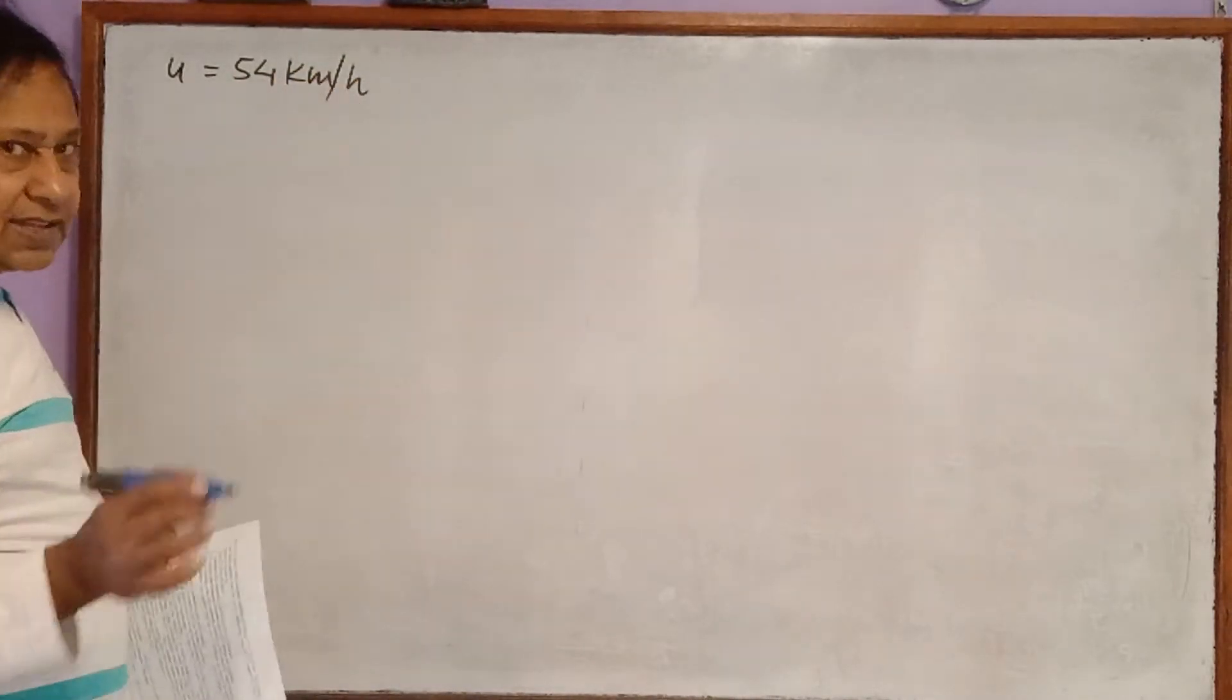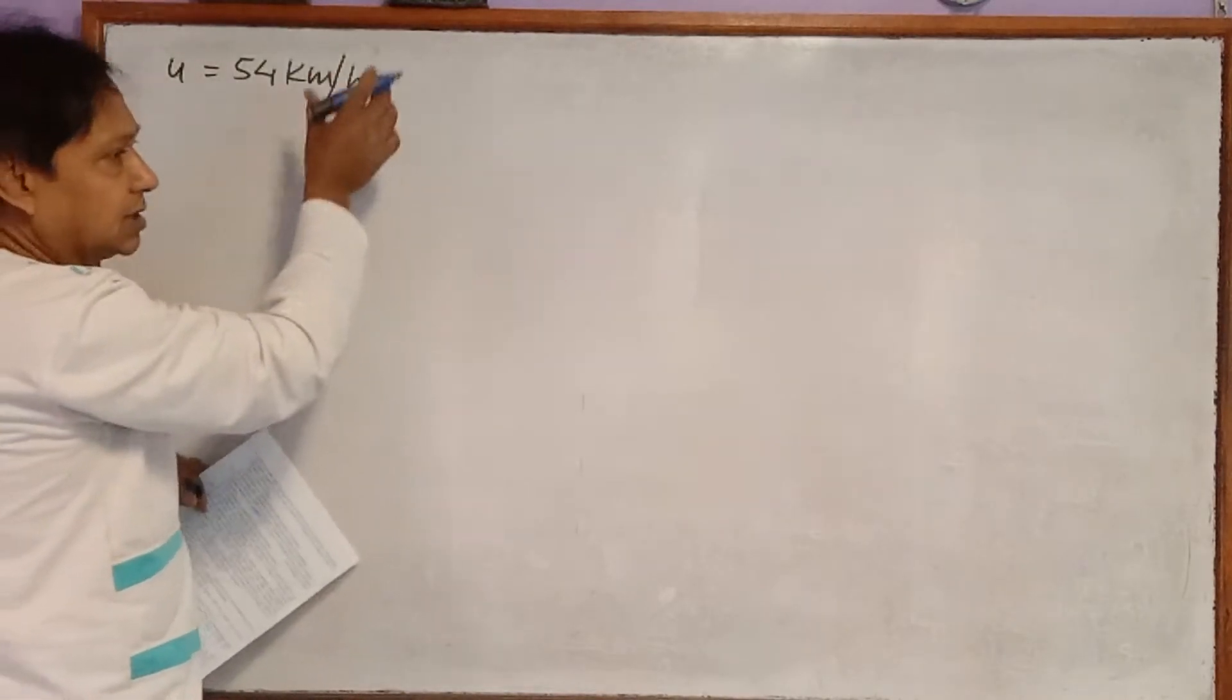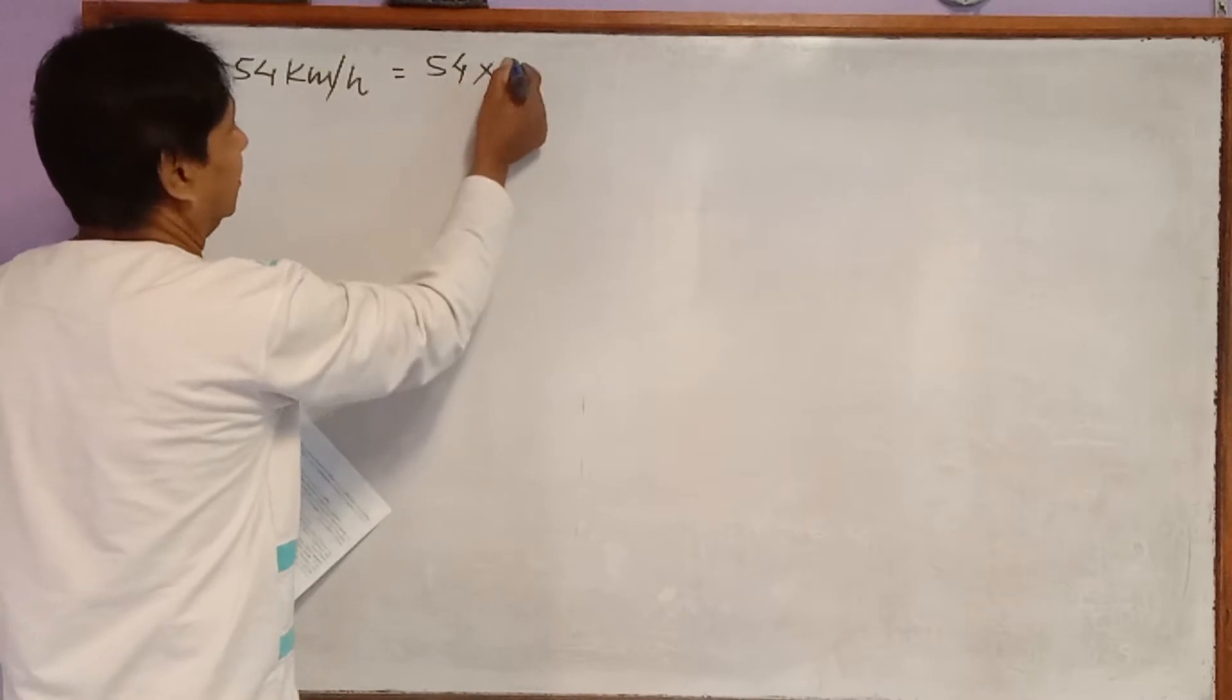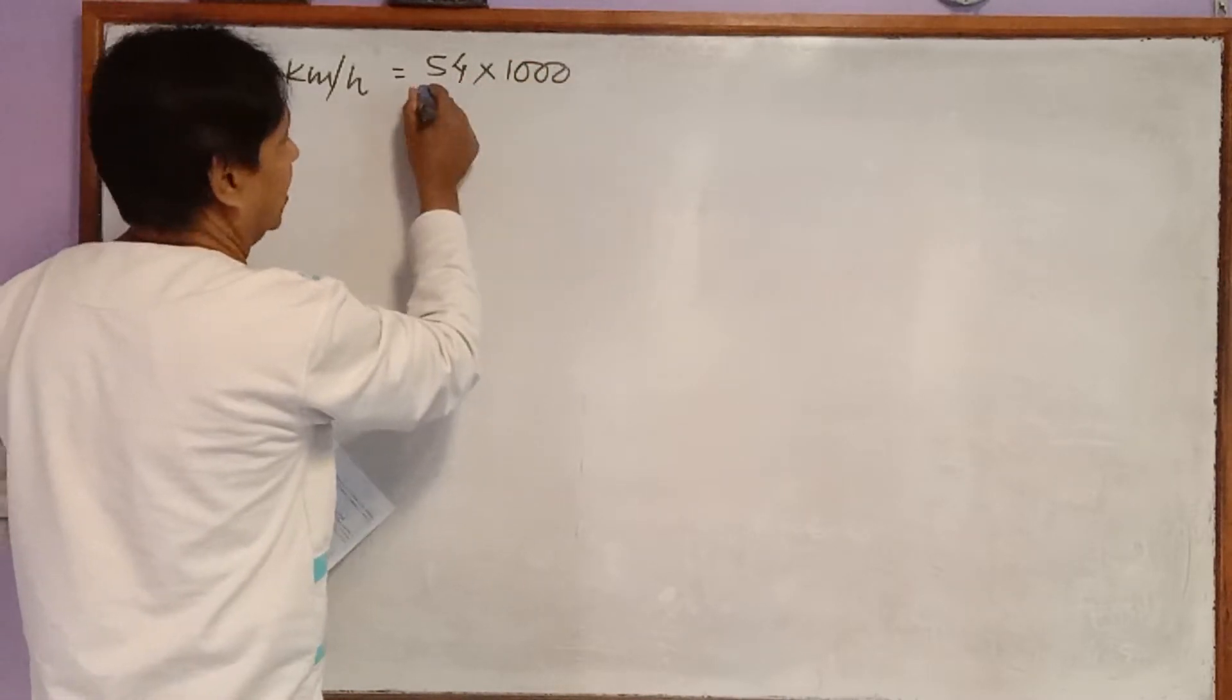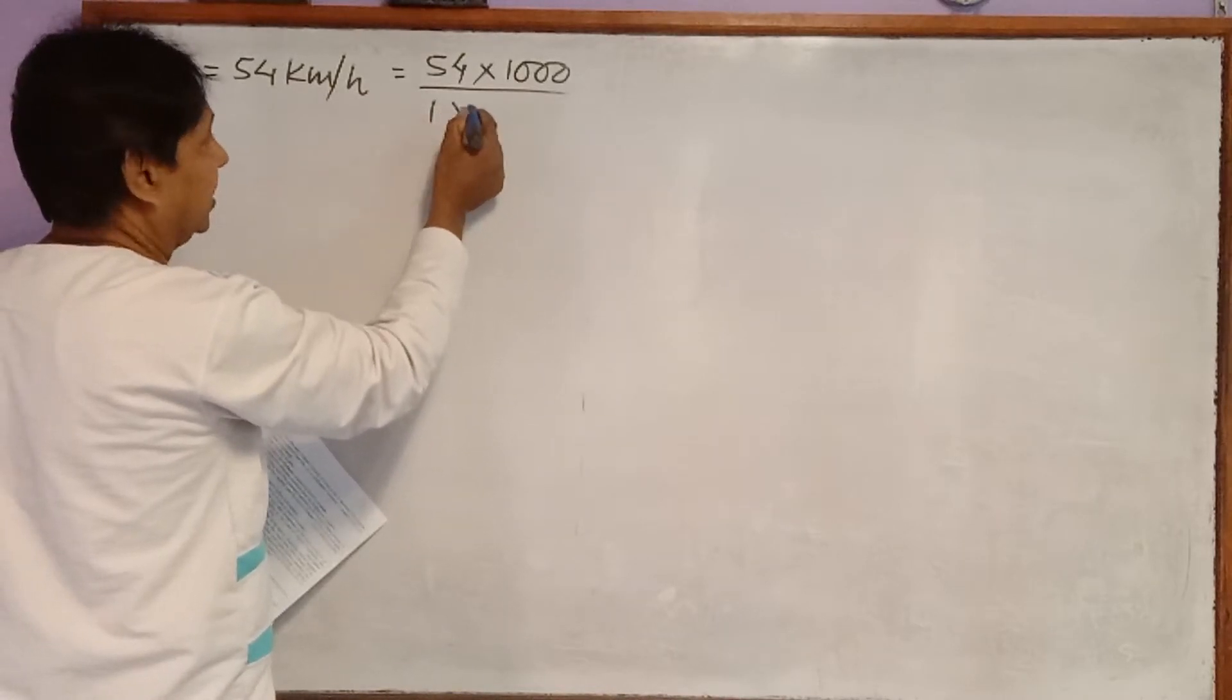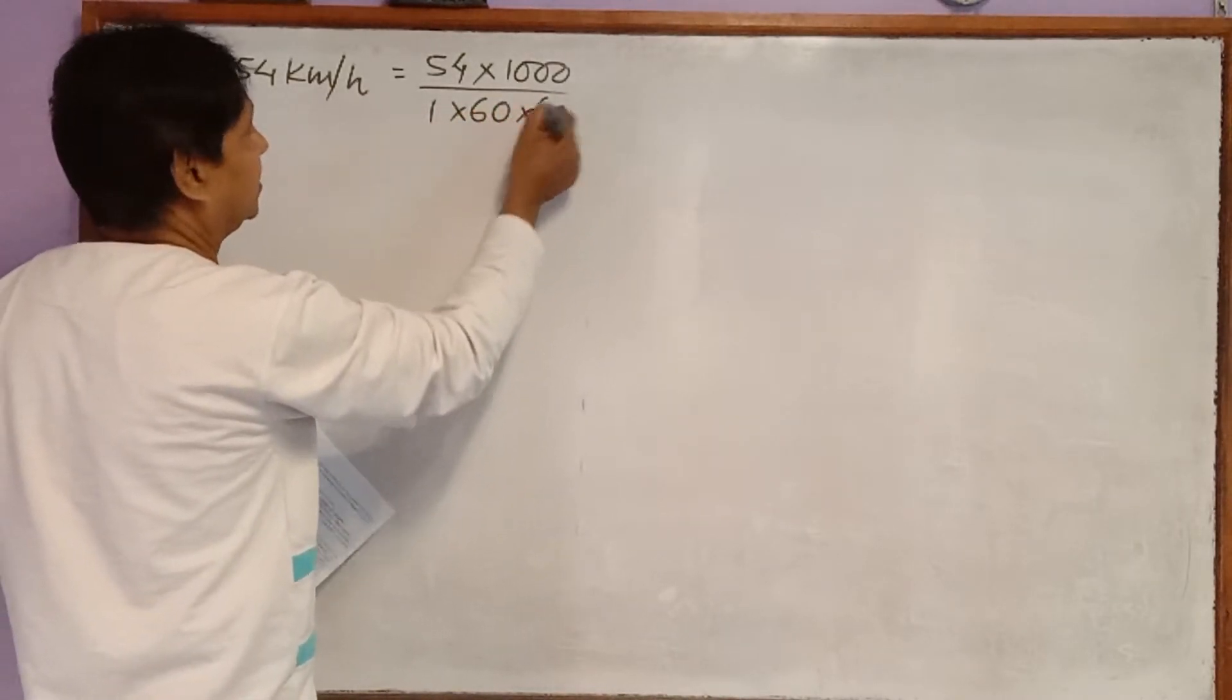Since we are using the SI system, we have to convert this into meter per second. We can convert this way: 54 kilometer when multiplied by 1000 converts to meter, and one hour we multiply by 60 into 60.